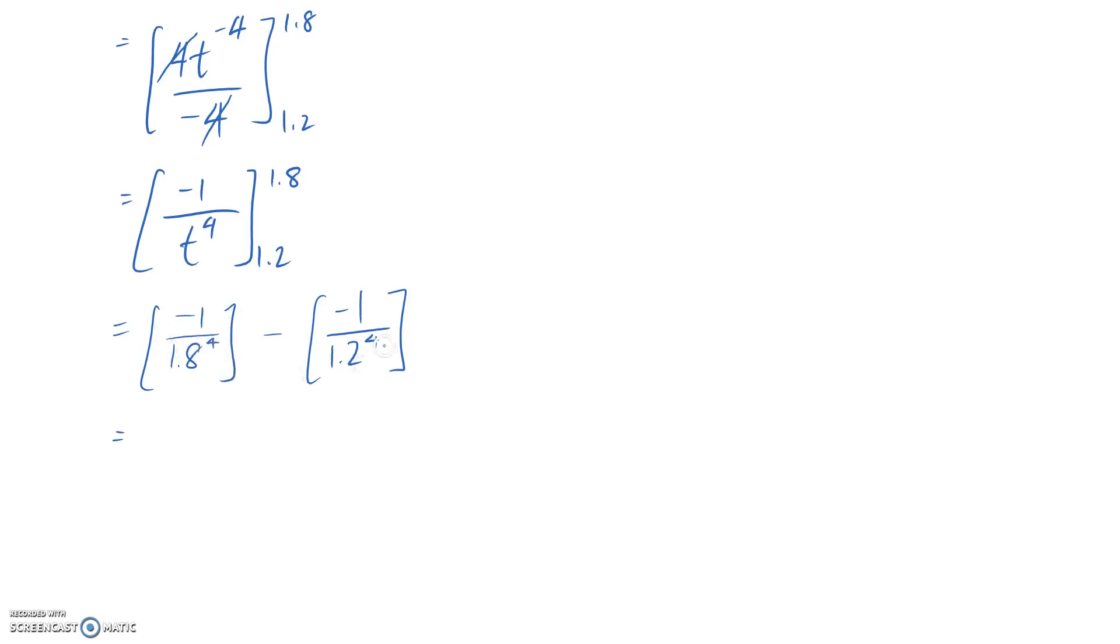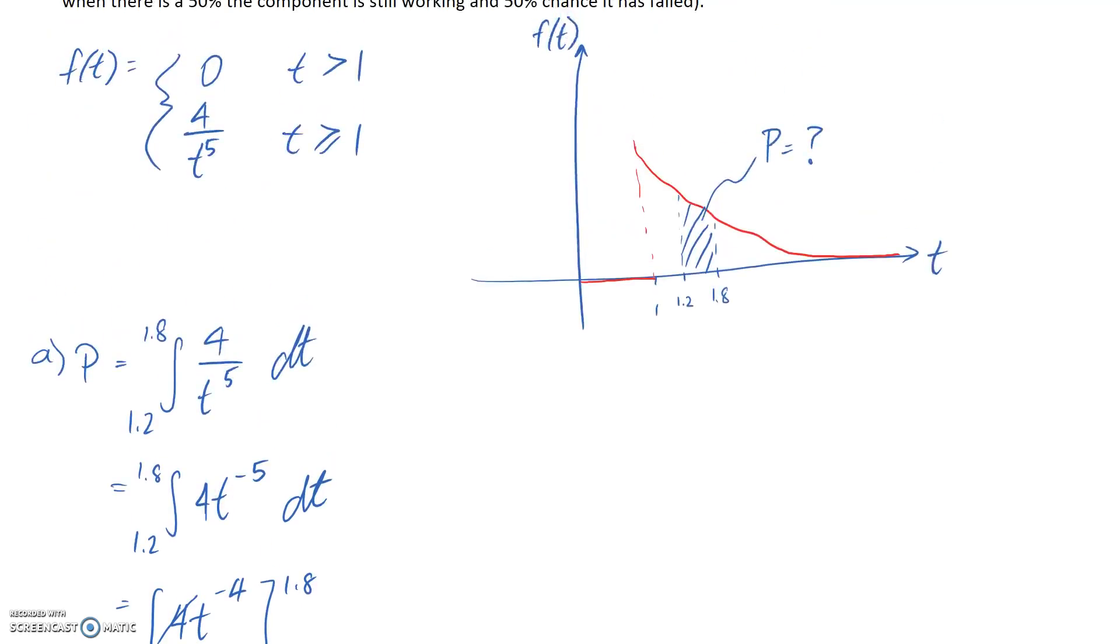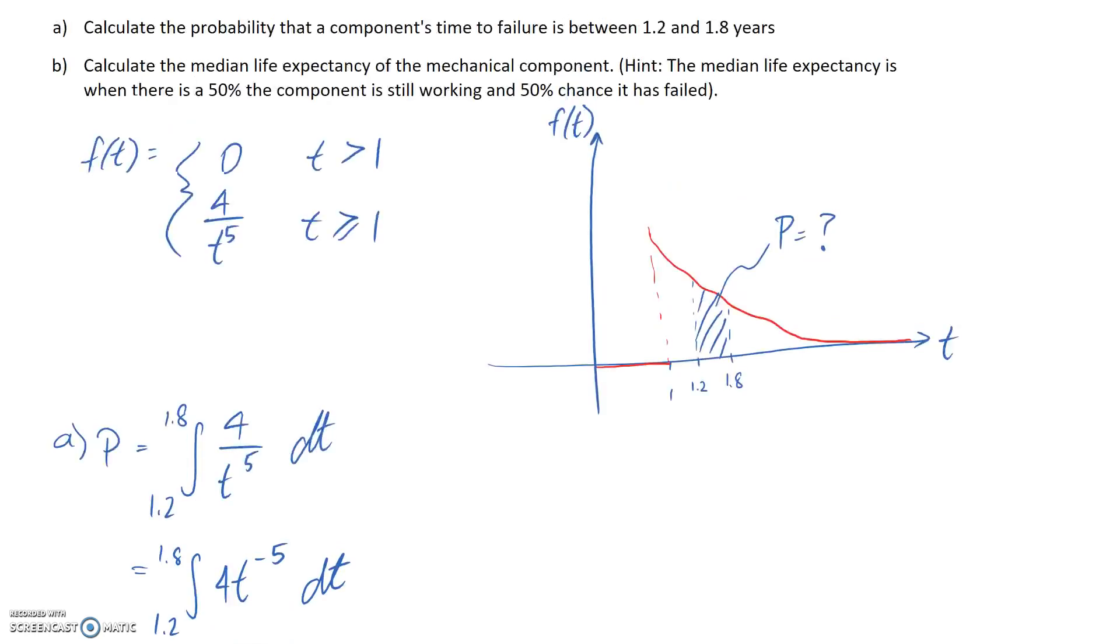If you pop all of this into a calculator, you end up with 0.387 approximately falling out. And if we convert that to a percentage, it's going to be about 38.7%. So what that's telling us is that there's a 38.7% chance that our component is going to fail between 1.2 and 1.8 years, corresponding again to the area inside this part of the curve.